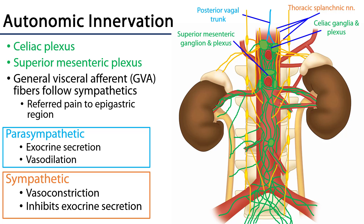In terms of innervation, the guideline is to think of the vasculature that serves the organ — the innervation will follow. Surrounding the celiac trunk is the celiac plexus, which derives its fibers from the thoracic splanchnic nerves as well as the posterior vagal trunk — sympathetics from the thoracic splanchnic nerves and parasympathetics from the posterior vagal trunk — and those fibers are conducted along the celiac artery and its branches to the pancreas. Arterial branches from the superior mesenteric artery via the superior mesenteric plexus also serve the pancreas.